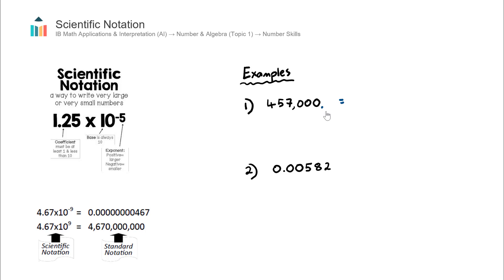The way to go about converting numbers into scientific notation is to think through how many times does the decimal point need to move, such that this number becomes a number between 1 and 10. For example, 4.57 as opposed to 457,000.